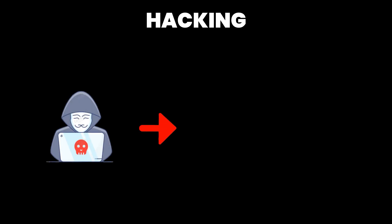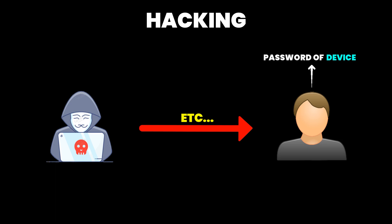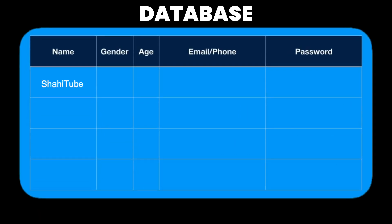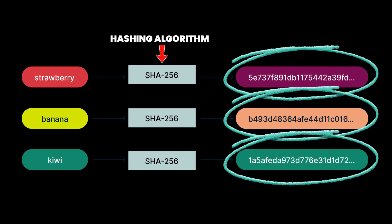Password hacking is the process where hackers attempt to get unauthorized access to someone's password of a system, account, or device. There are various methods they can use, like SQL injection, password spraying, etc. The purpose is to extract the password from either the server, the system, or the target person. But passwords are not stored in plain text — even if a hacker manages to get access to the database, almost every website stores passwords by hashing or encrypting them using a secret key.